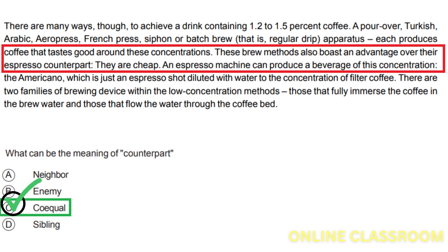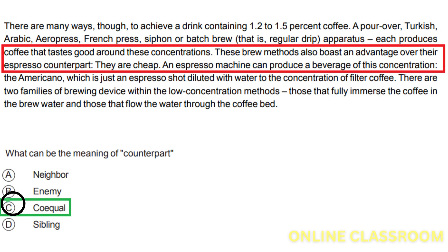Option D, sibling, is incorrect — counterpart does not refer to a sibling in this context; it is used to compare brew methods to espresso and highlight their advantages. In summary, option C, coequal, is correct because counterpart means having the same function or characteristics, which aligns with the comparison made between the brew methods and espresso. Options A, B, and D are incorrect because they do not accurately define the meaning of counterpart in this context.